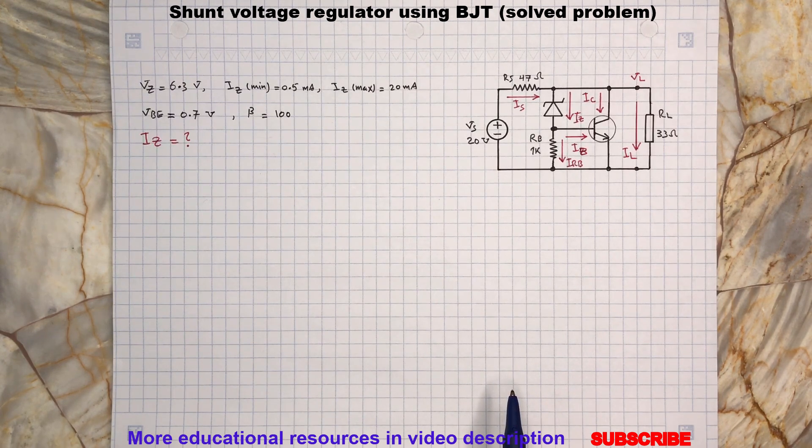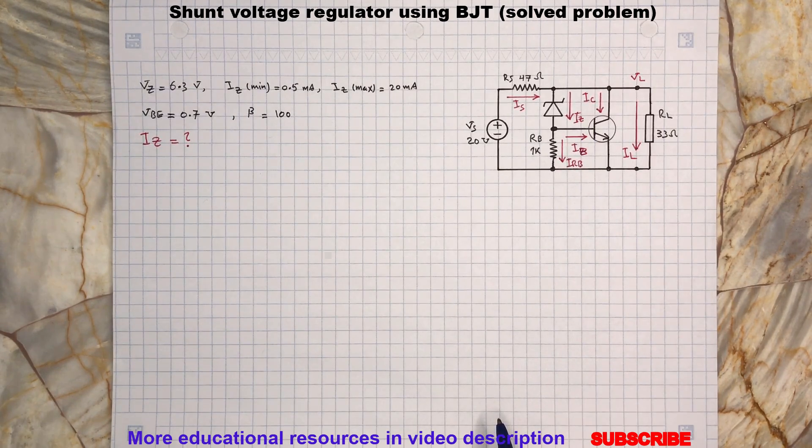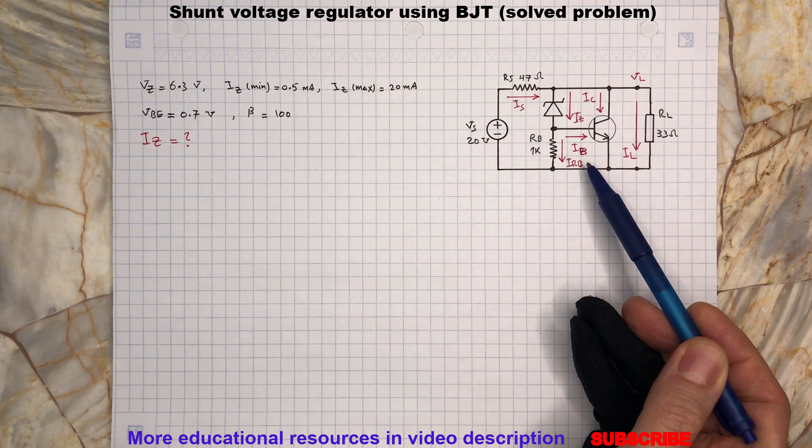This is a basic shunt voltage regulator and we would like to determine the current flowing through the Zener diode. I will provide a brief summary about how this circuit works at the end of the video. Let's jump into calculating the current values in all branches.